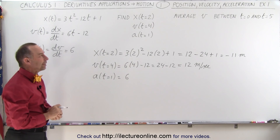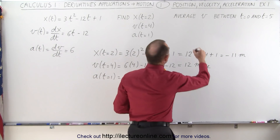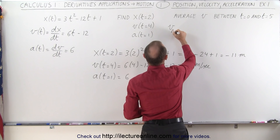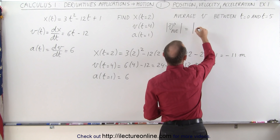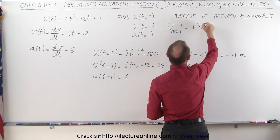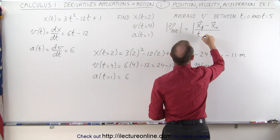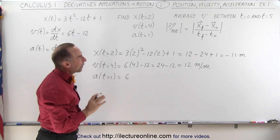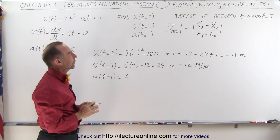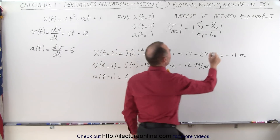What about the average velocity? That depends on whether you want to think of velocity as a vector quantity or as simply a scalar. If we think of it as a vector quantity, then the average velocity would be the absolute value of the final position minus the initial position, all divided by the elapsed time — t final minus t initial. What we're doing is finding the displacement during that time period and dividing that displacement by 5 seconds.